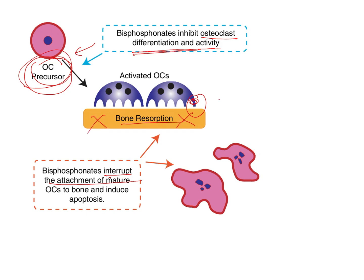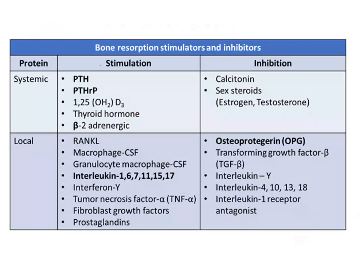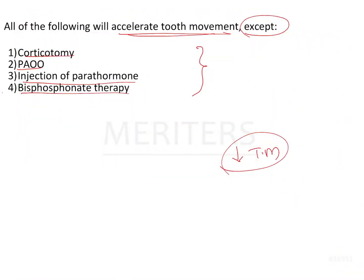Bisphosphonates also induce apoptosis in osteoclast cells, bringing about cell death. All of this reduces the number of osteoclasts, which reduces bone resorption and ultimately reduces tooth movement. There are various systemic and local factors — as well as drugs — that either stimulate or inhibit tooth movement, and this is an important table to review for exams. The answer here is that bisphosphonate therapy is the one that reduces tooth movement.